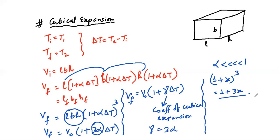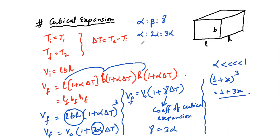We have now discussed all three types: linear expansion, superficial expansion, and cubical expansion. Note the relationships between the coefficients: beta = 2 alpha and gamma = 3 alpha, giving the ratio alpha : beta : gamma = 1 : 2 : 3.